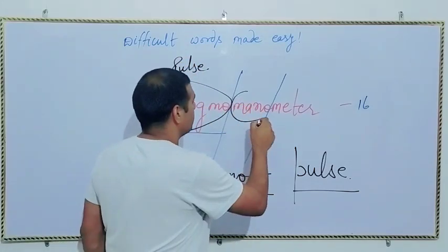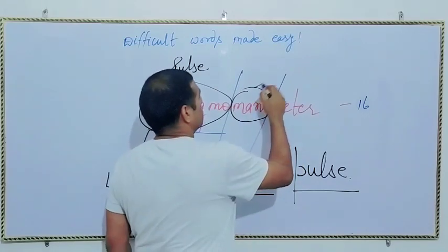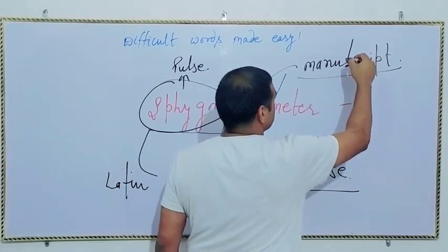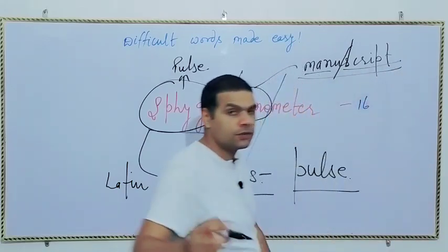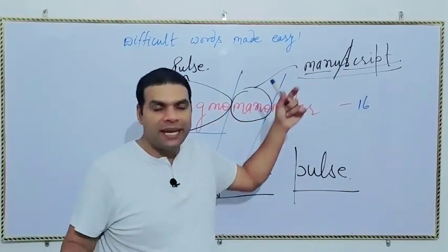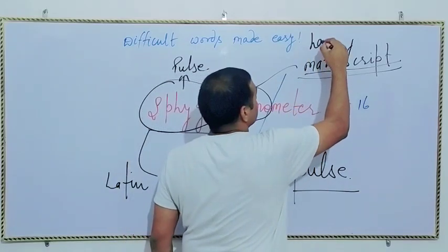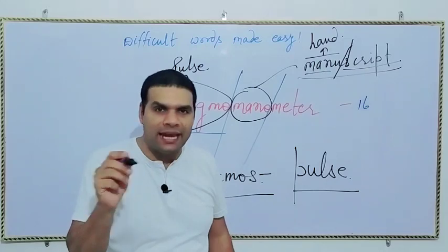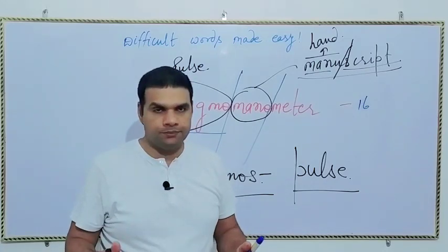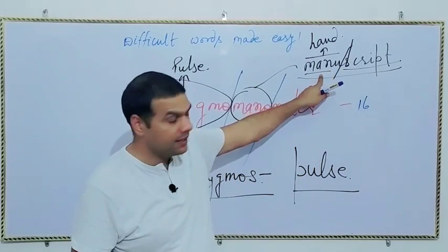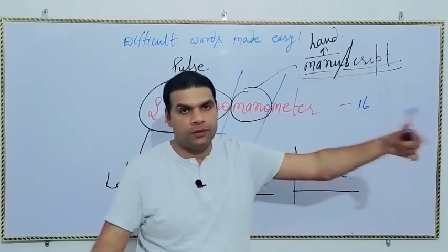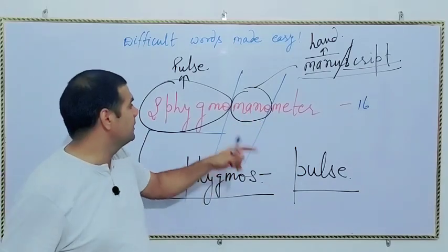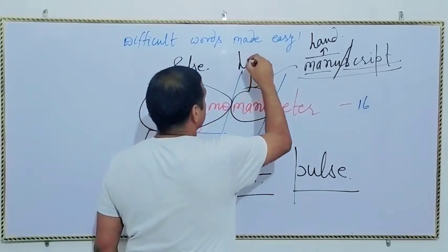Mano might seem strange to you, but let me give you a word - manuscript. What is manuscript? Divide it in two - manu plus script. Script means written or writing. Manus means hand. So manuscript means a piece of writing which is written by hand. In Hindi we call it pandu lipi. So manus means hand and script is your writing, way of writing. So the same manu, the same mano, means hand here.